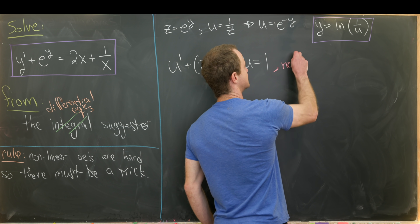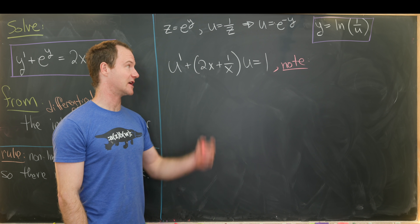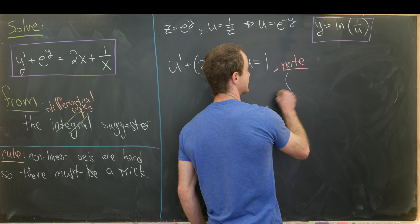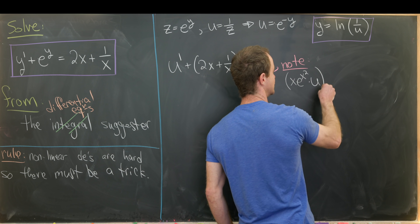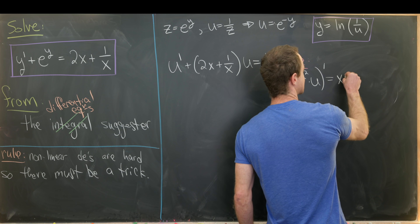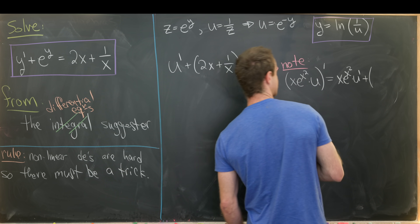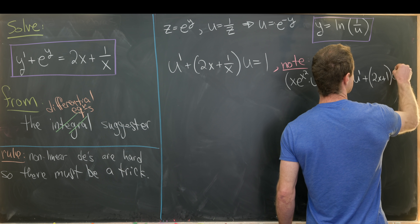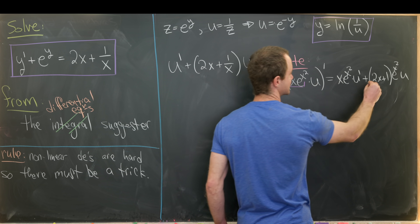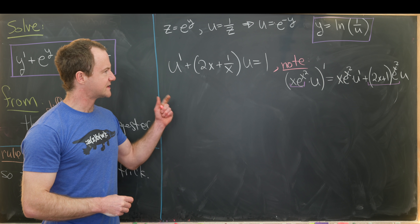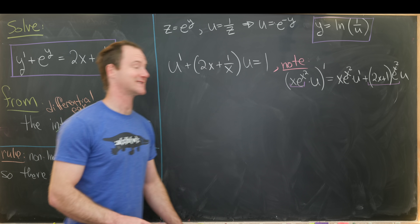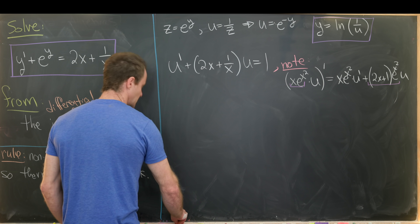Rather than using the formula for an integrating factor, we observe directly that we can multiply the equation by something so the left-hand side becomes a product-rule derivative. Specifically, if we take the function x times e to the x squared times u and differentiate it, using the product rule and chain rule we get x times e to the x squared times u prime plus (2x squared plus 1) times e to the x squared times u. So we multiply both sides by x times e to the x squared.